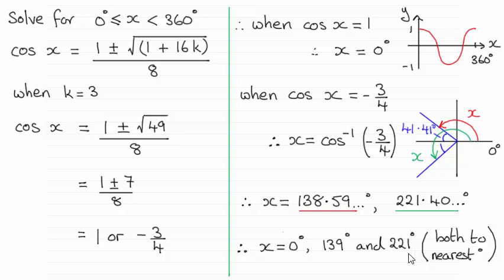Now I'll take you through the method that I used just in case there were any problems. You can see that when we substitute k equals 3 into this equation, we end up with cosine x equaling 1 or minus 3 quarters.